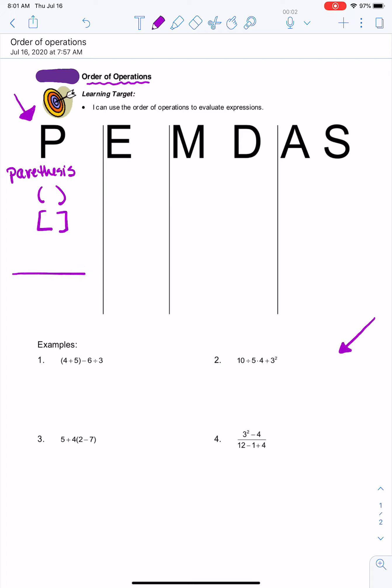If you see a fraction bar, that means division, but in order to simplify that, you're going to simplify the top first, and then simplify that bottom, like separate groups.